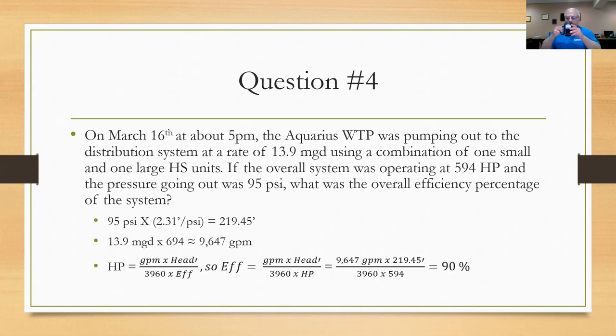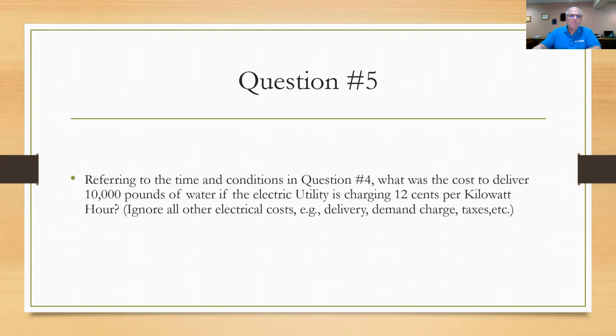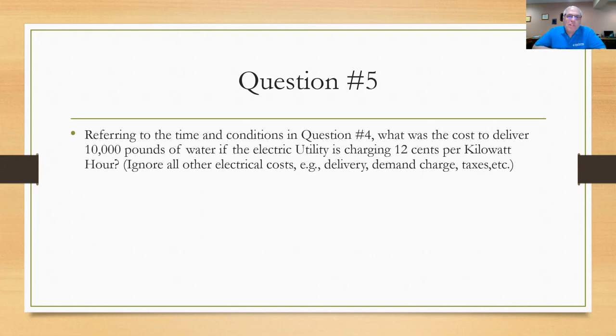Hope you did well on that. All right, let's try question number five. Now referring to question number four to get the time and the conditions that you're operating at. What was the cost to deliver 10,000 pounds of water if the electric utility is charging 12 cents per kilowatt hour? You can ignore all other electric. I know when you get an electric bill, you see all the kind of costs, especially here in Ohio. First Energy has a very intricate billing system. They get to charge you for demand, for delivery costs, all that stuff. But we're just talking about the kilowatt hour charge of 12 cents right now. I'm going to pick that number out of the air. It could be anything for you guys.